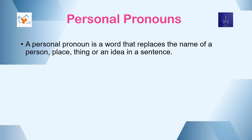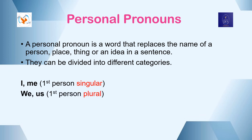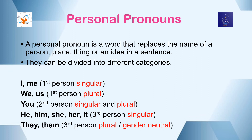Personal pronoun: A personal pronoun is a word that replaces the name of a person, place, thing, or idea in a sentence. They can be divided into different categories. 'I' and 'me' are first person singular — the person speaking. 'We' and 'us' are first person plural. 'You' is second person singular and plural — the person spoken to. 'He,' 'him,' 'she,' 'her,' 'it' are third person singular, and 'they' and 'them' are third person plural or gender neutral — the person spoken of.